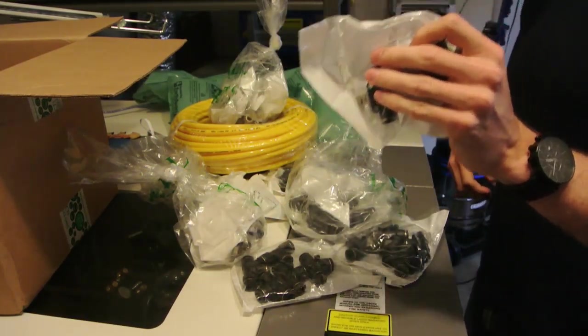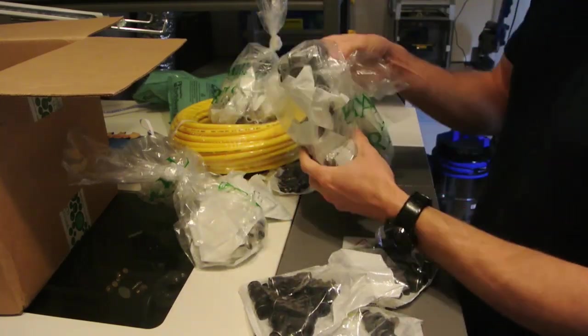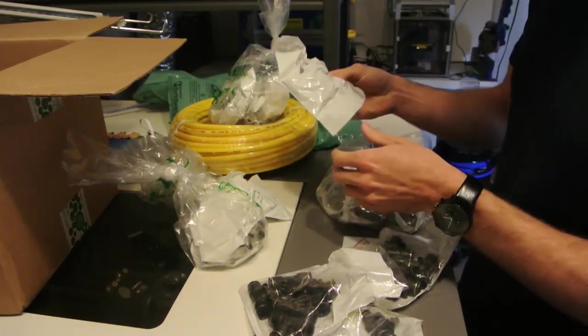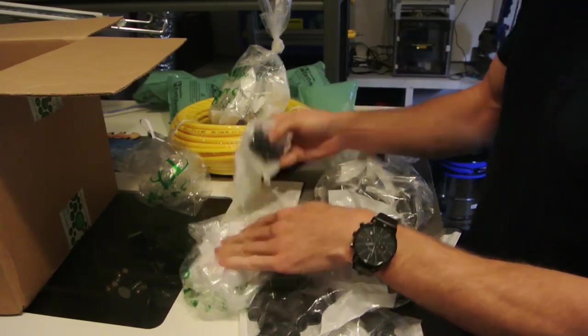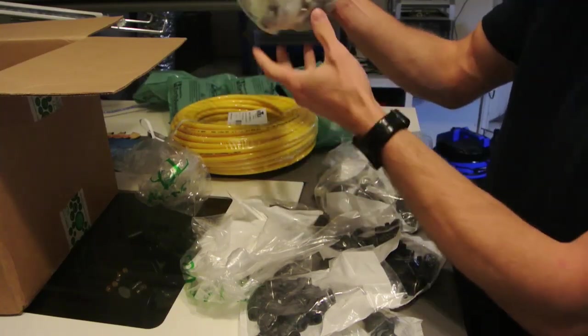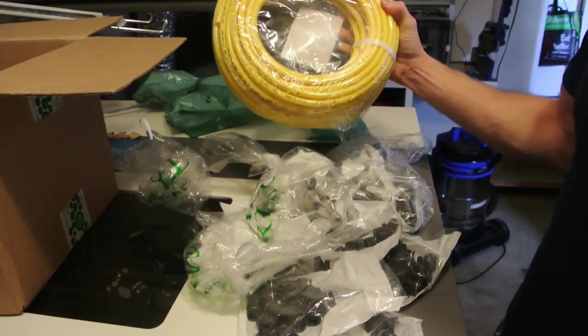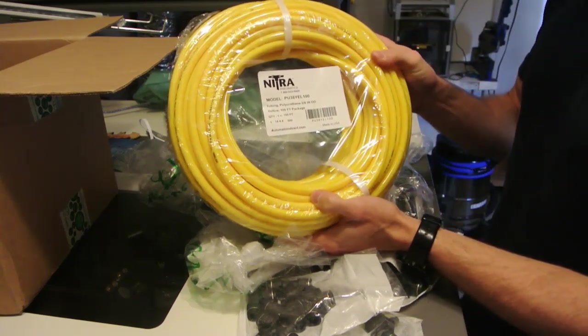So flow control valves in line, T adapters, Y adapters, more T adapters, more hose fittings, on-off valves, more hose fittings, and 3 1/8 inch OD pneumatic tubing. This is for the bigger cylinders.